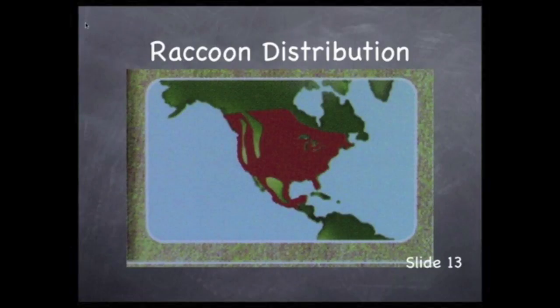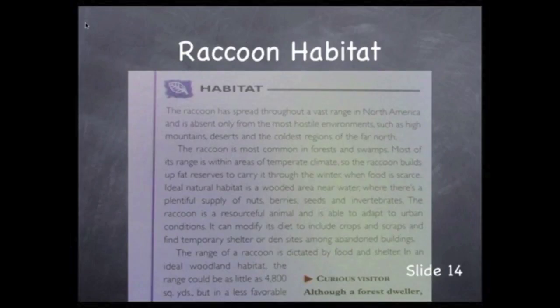If you're familiar with North American geography, you'll notice two mountain ranges from which raccoons are absent: the Rocky Mountains and the Cascade Mountains. Raccoons are absent from central Mexico as well, perhaps because of the arid climate. Inside the wildlife card, there's a section devoted to habitat. We read here that raccoons are natives of forests and swamps in areas of temperate climate.